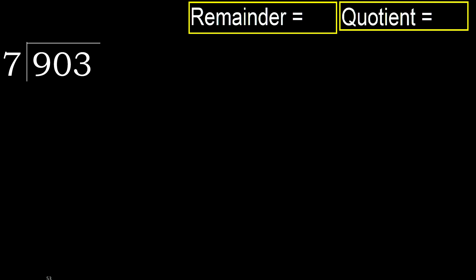903 divided by 7. 9 is not less than 7. 7 multiplied by which number is nearest to 9 but not greater? 7 multiplied by 2 is 14, which is greater. Multiply by 1: 7 is not greater. Subtract: 9 minus 7 is 2.